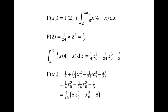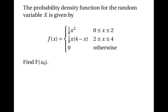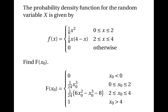So finally, F of x0 equals 0 when x0 is less than 0; 1 over 24 times x0 cubed when x0 is between 0 and 2; 1 over 24 times (6x0 squared minus x0 cubed minus 8) when x0 is between 2 and 4; and 1 when x0 is greater than 4. That was quite a lot of work — questions of this type tend to involve quite a lot of fiddly calculation.